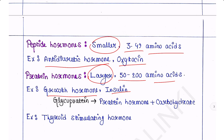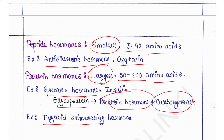Some protein hormones have attached carbohydrate groups and are thus called glycoprotein hormones. An example is thyroid-stimulating hormone.